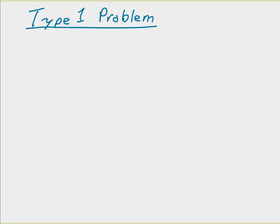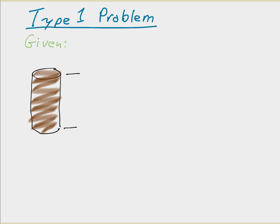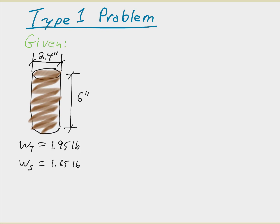Here is a type 1 example problem. We are given a cylindrical specimen of soil, 2.4 inches in diameter and 6 inches tall. We weigh the specimen and determine it has a total weight of 1.95 pounds. We then put the specimen in an oven overnight to dry it out and weigh it again — it now weighs 1.65 pounds. Since all the water has been removed by oven drying, this represents W sub s, the weight of the solids. We assume the specific gravity of the solids is 2.66.